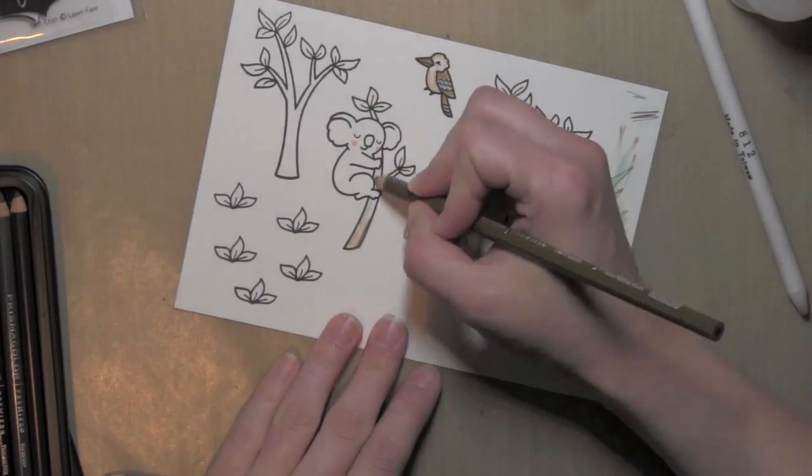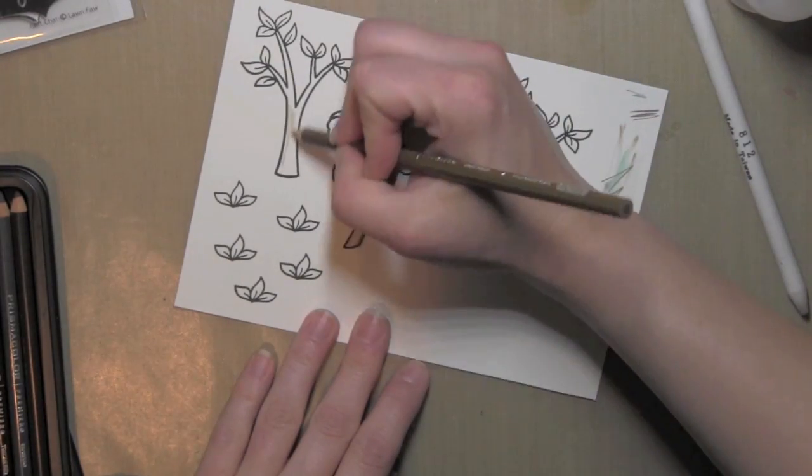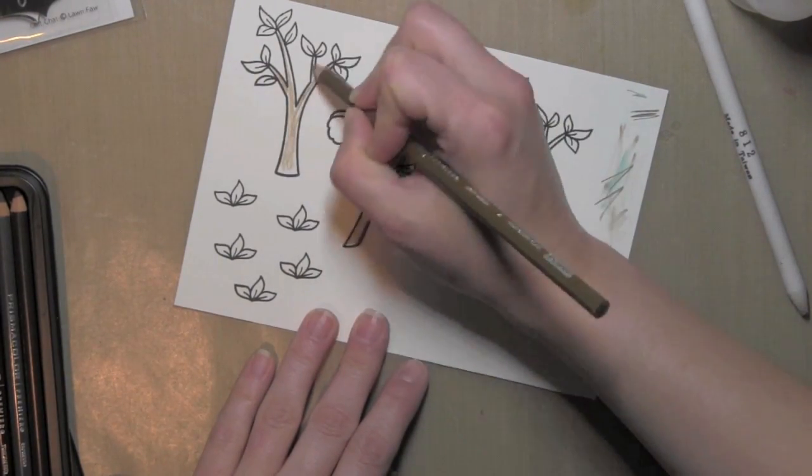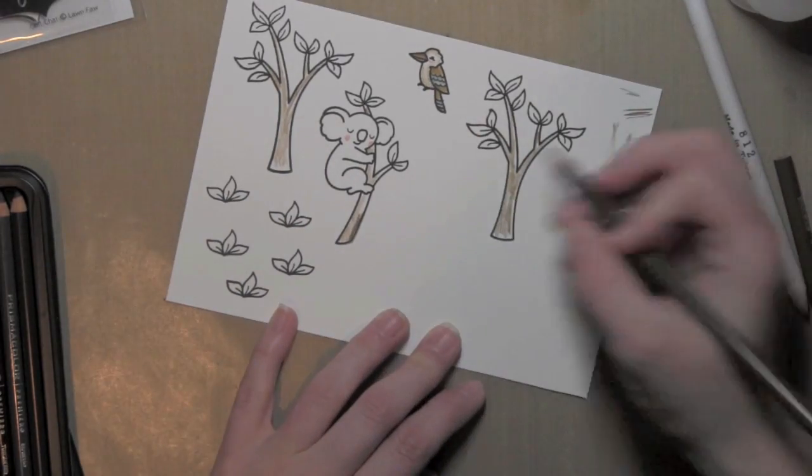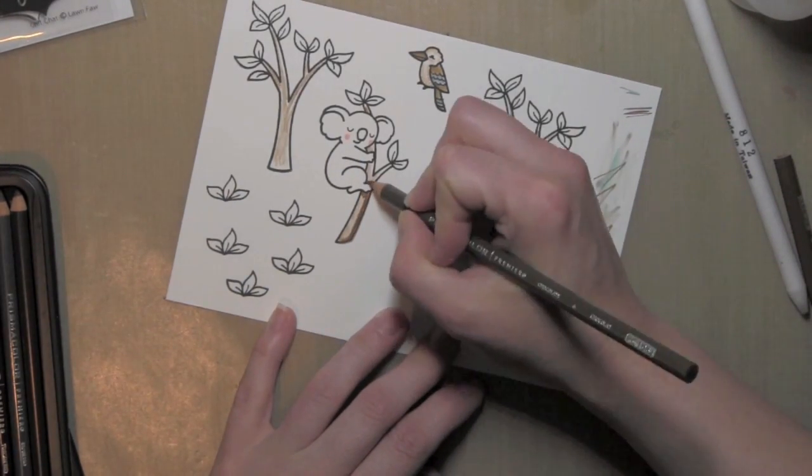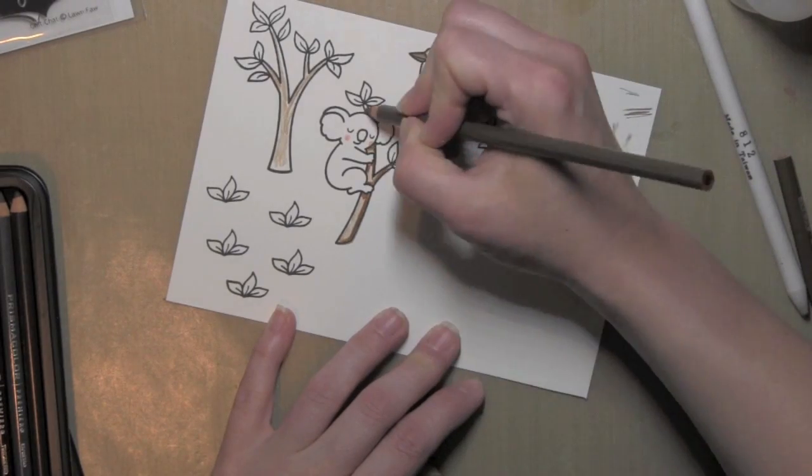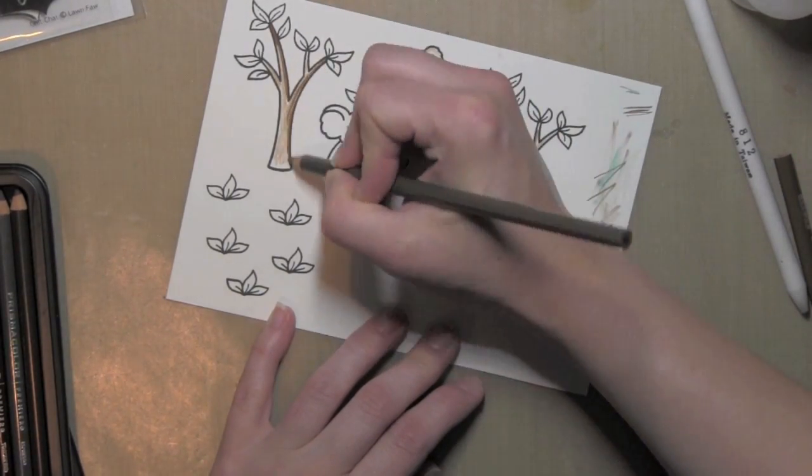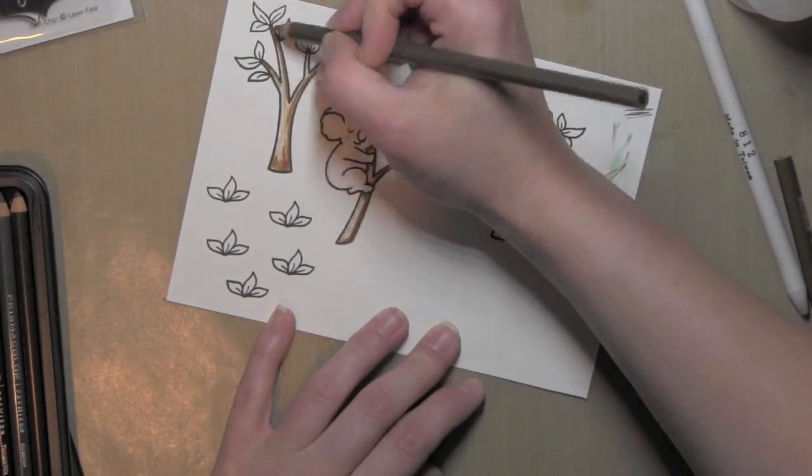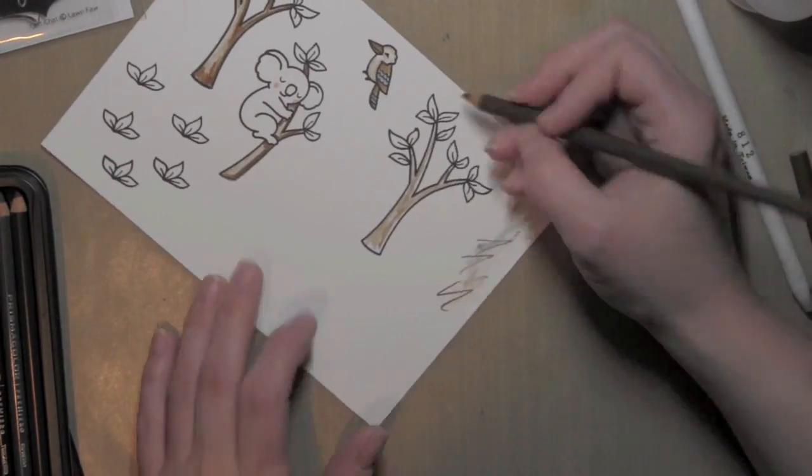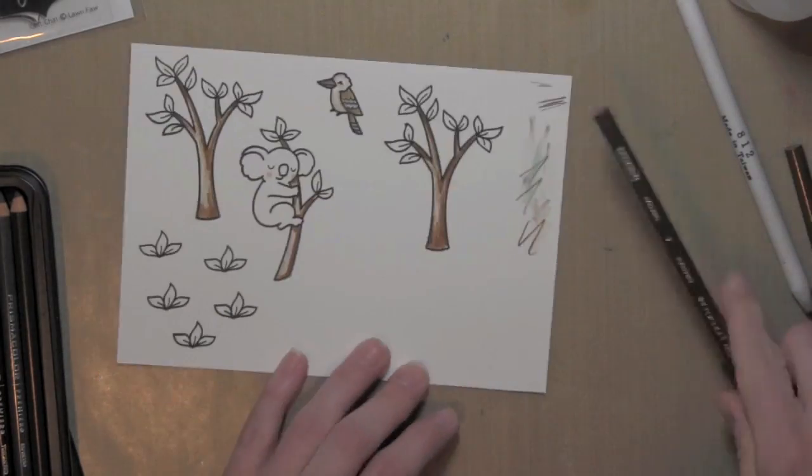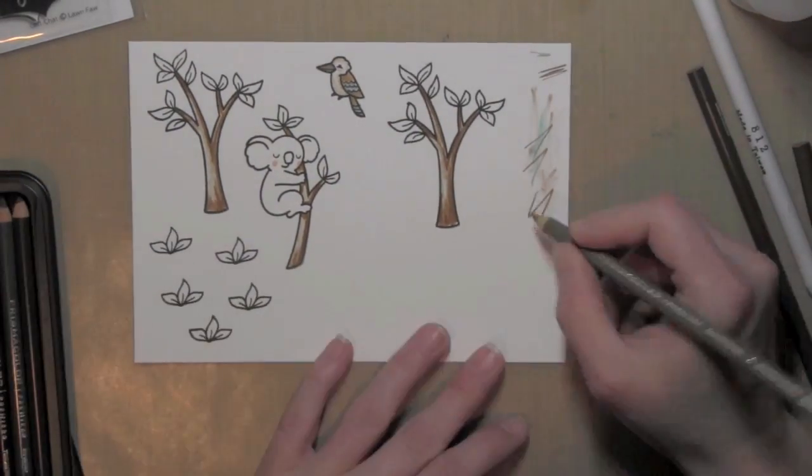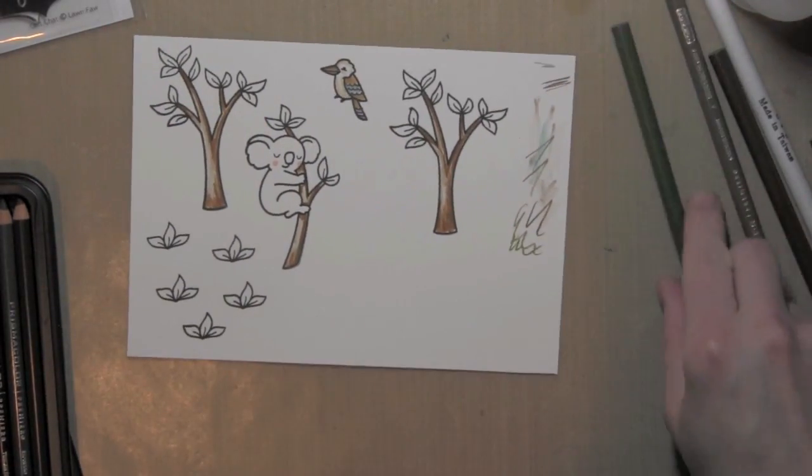For the trees I'm using a couple of shades of brown. I'm laying down a lighter color first and I'm not coloring it very neat. I'm kind of scribbling it in there. The Gamsol will really smooth everything out so I don't have to take care to color really neatly. Then I'm laying down some shadowing with a darker shade of brown and then I'll go back in with the Gamsol and smooth that out here in a minute.